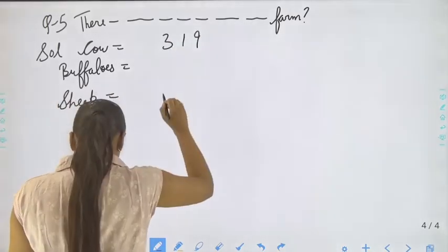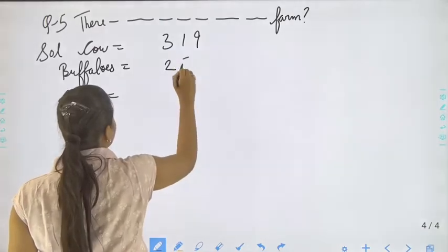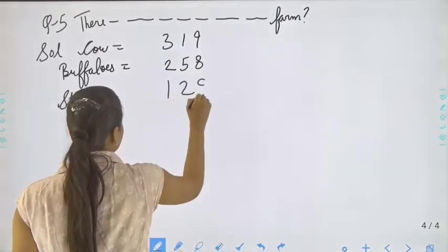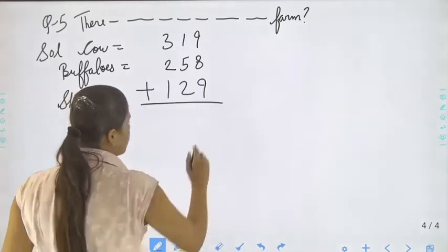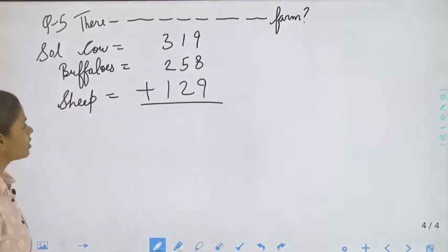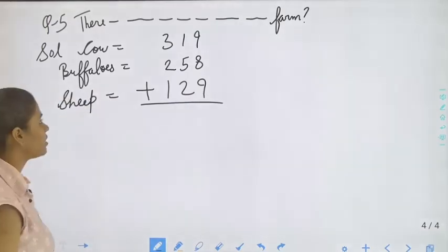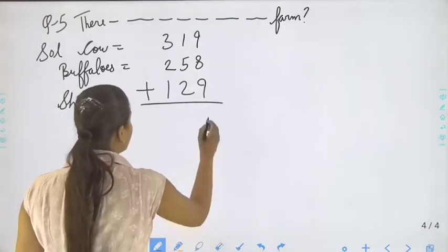319 cows, 258 buffaloes, and the last one is sheep, that is 129. Again we have to do addition. 9 plus 9 it will be 18, and 18 plus 8 it will be 26.